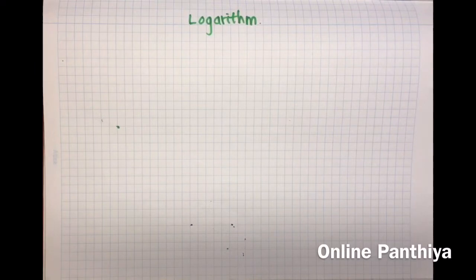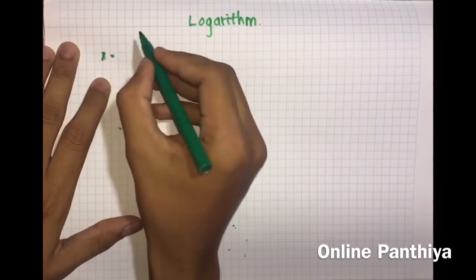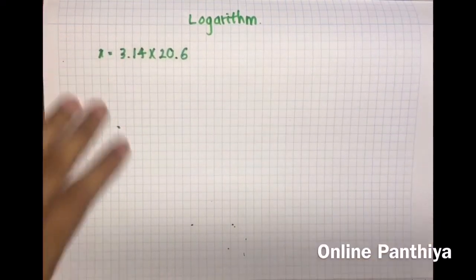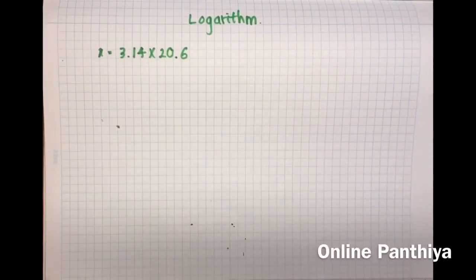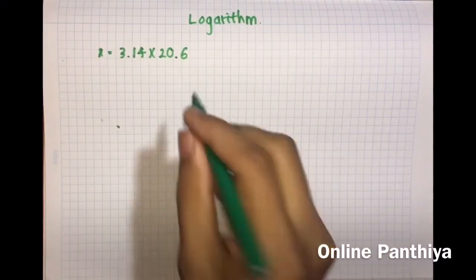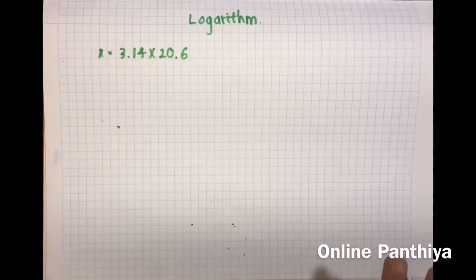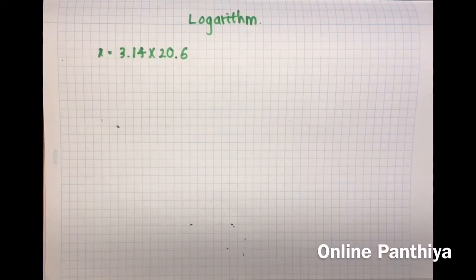You can just remember the method, go to the exam hall, take the book, observe the values, and get the marks. Now, say there is a question: find the value of 3.14 multiplied by 20.6. If you go to solve this using multiplication, it is going to take a very long time because you have to multiply each of these numbers. If you have four or five numbers together, it is definitely going to take a very large time. Therefore, that is the reason why we use logarithm.